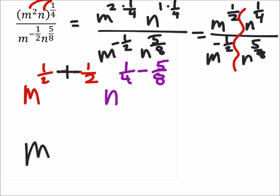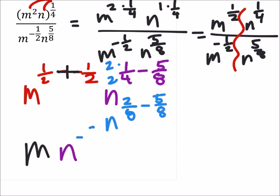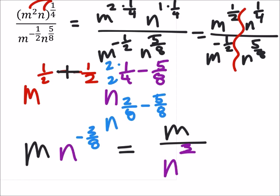And then I've got n, but I do need common denominators on this one. I'll multiply the 4 and the 1 by 2. So that'd be n to the power of 2 eighths minus 5 eighths, which would be negative 3 eighths. And if we only want positive exponents, then I've got m over n to the power of positive 3 eighths.